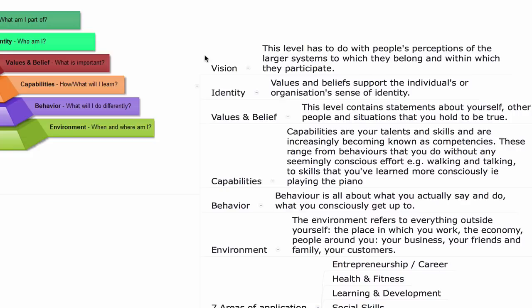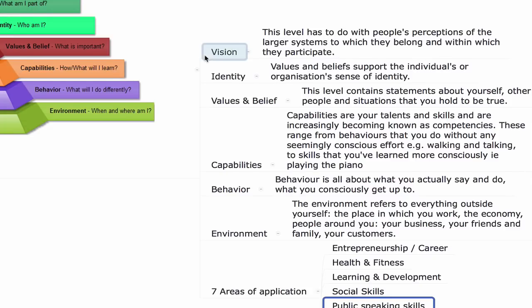Behaviors included voice tonality, body language, smiling, being in a flow energy. For environment, I considered multidimensional questions: What environments can I practice in? What environments let me gauge my progress? Which ones are more challenging, and which are too easy — where I'm not really growing? I also applied a direct response marketing principle: speaking to the right audience at the right time. All these considerations fell within the scope of the Robert Dilts model.